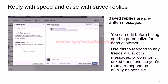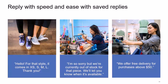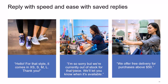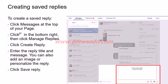Saved replies work by identifying the queries that come in very frequently, then creating and setting standard responses based on those commonly asked questions. This makes you more efficient. For example, saved replies could be: 'We are currently out of stock for that piece, we'll let you know when it's available,' or 'We offer free delivery for purchases above a certain amount.' These help you serve customers more quickly.